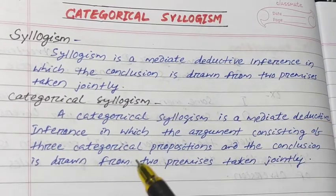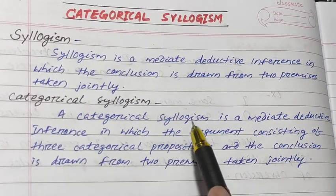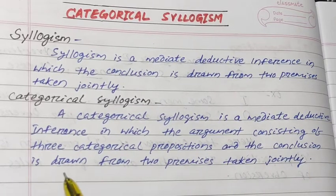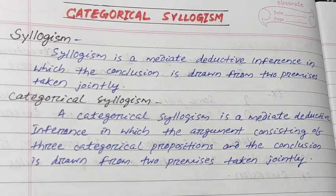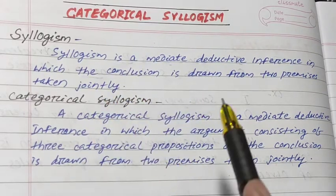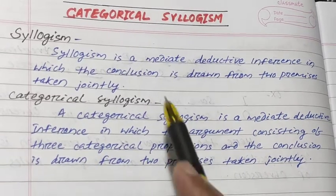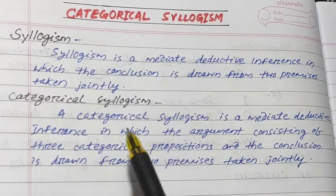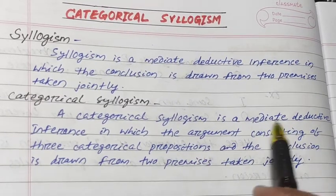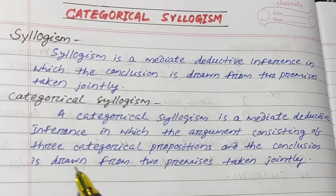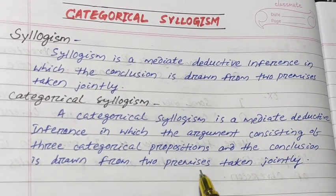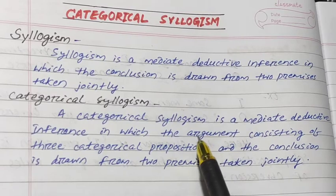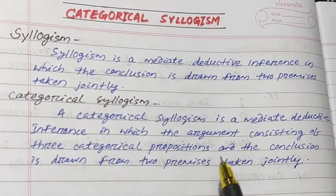A categorical syllogism is a mediate deductive inference in which the argument consists of three categorical propositions and the conclusion is drawn from two premises taken jointly. The difference between syllogism and categorical syllogism is that in syllogism we may use hypothetical, alternative, or disjunctive propositions, but in categorical syllogism we use only categorical propositions. It is also a mediate deductive inference consisting of three propositions: two premises and one conclusion.